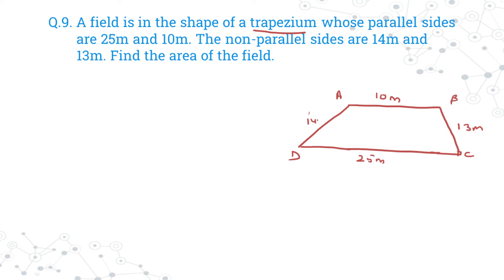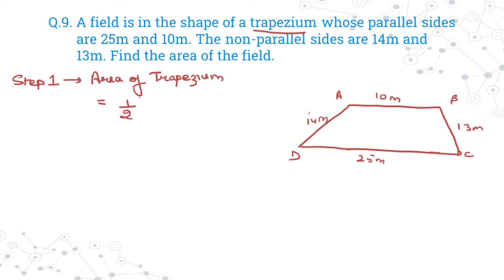We have to find the area of the field. The area of a trapezium = half × (sum of parallel sides) × (distance between them). We know the sum of parallel sides, but we don't know the distance between them, so we need to calculate it.